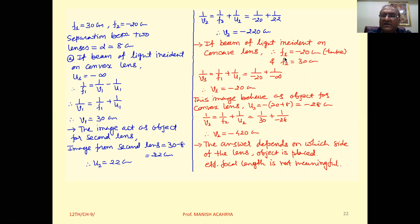Now this particular image will behave as an object for the convex lens. The image formation is at minus 20.